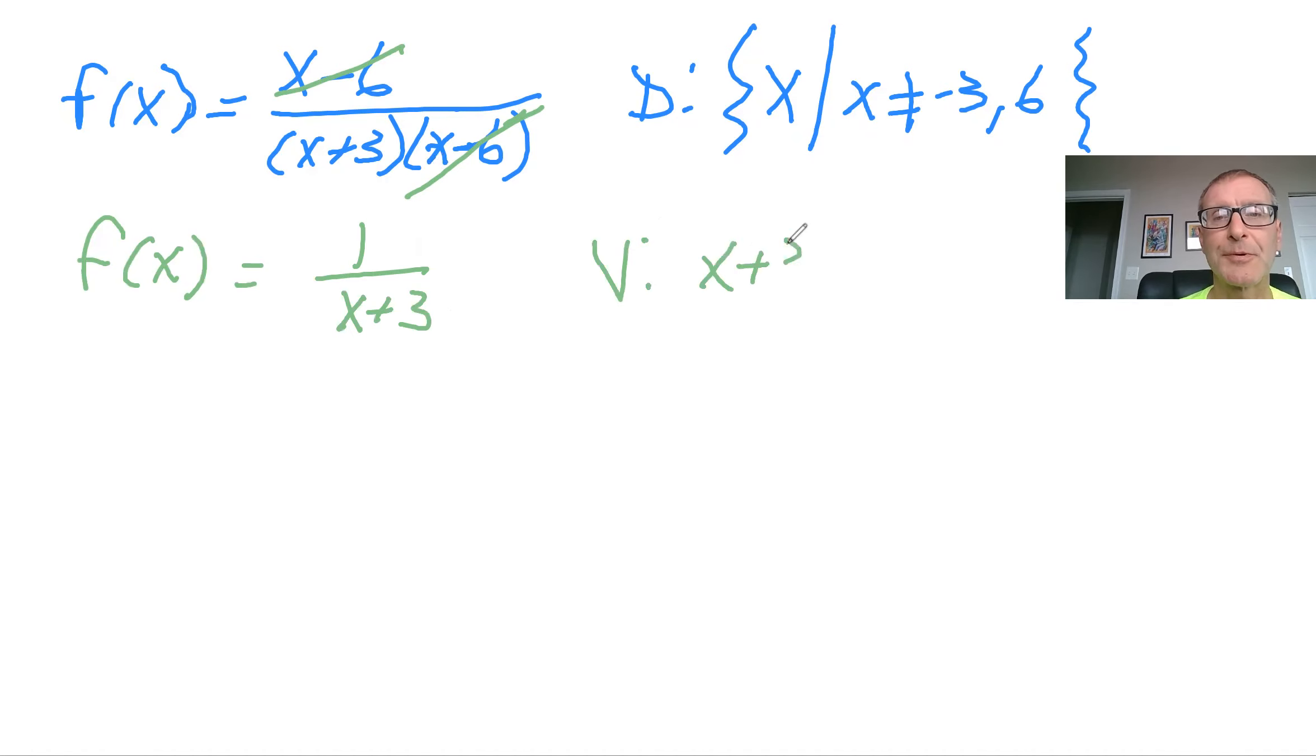So the vertical asymptote, again, remember it's an equation of a line. X plus 3 equals 0. So again, the same vertical asymptote, X equals minus 3. So you see that the vertical asymptotes is always in the spot where the domain is undefined. But there could be more in the domain that's undefined than there are vertical asymptotes because that's where this cancellation comes in.